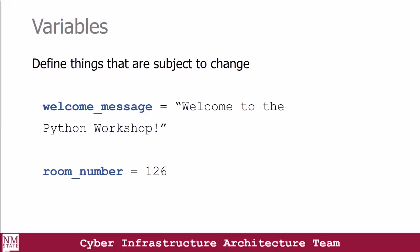Next, we'll talk about variables. Whenever you're programming, we need to build systems for dealing with data that changes over time. Python uses variables to define things that are subject to change. For example, we have a welcome message variable set equal to a double-quoted string 'welcome to Python workshop', and then a room number variable set equal to a numeric value. Both variables have different data types. Python uses dynamic typing, which is more flexible but allows variables to change types. Type checking is on the fly during execution — it doesn't really know the type of a variable until the code is run.